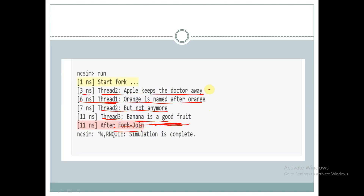At eleven nanoseconds we are also getting 'thread three: banana is a good fruit' and 'after fork-join.' So like this we have to check which display statement appears at which time in the output.